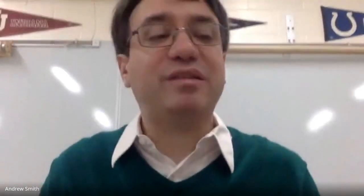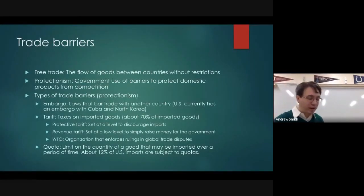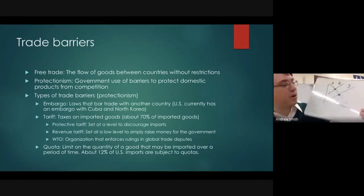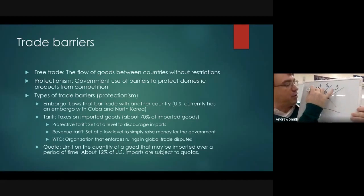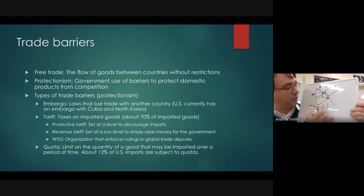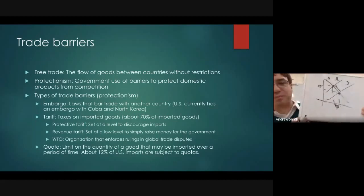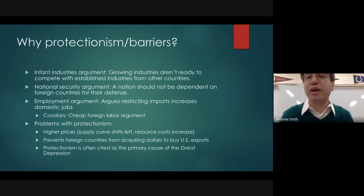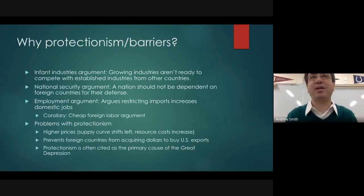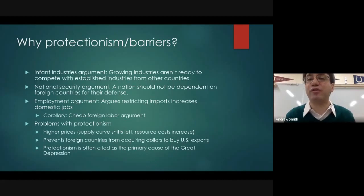Trade barriers decrease supply and thus raise prices. They also cause quantities to go down. We know that trade barriers are generally economically a bad idea because they raise prices, cause quantities to go down, and are therefore inherently inefficient — there is less efficiency in the economy.